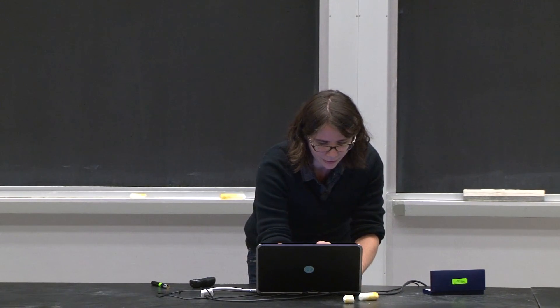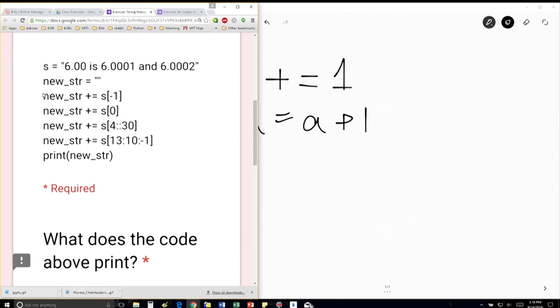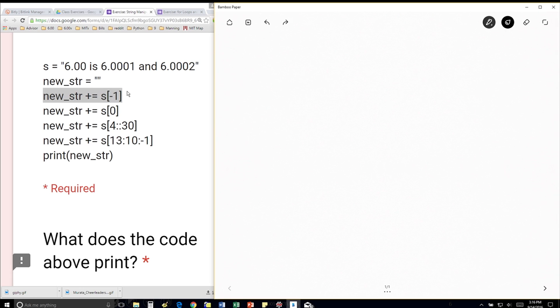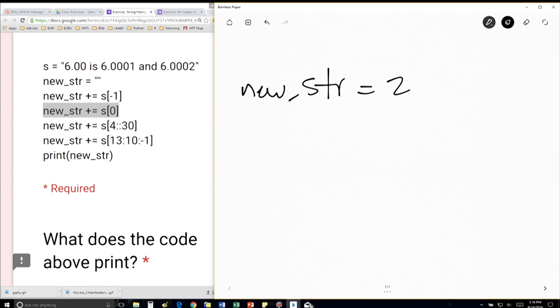So all this means here, this line here, is we're going to take the previous string that we have, and we're just going to add it to itself plus the last letter. So the first thing we're going to have is going to be new_str is equal to 2. Then this line here is going to say, now I'm going to add to the 2 that I already have the element at position 0, which is a 6. So I'm going to have 26.